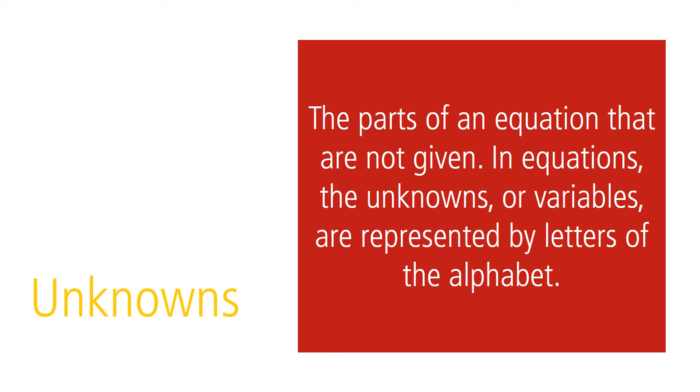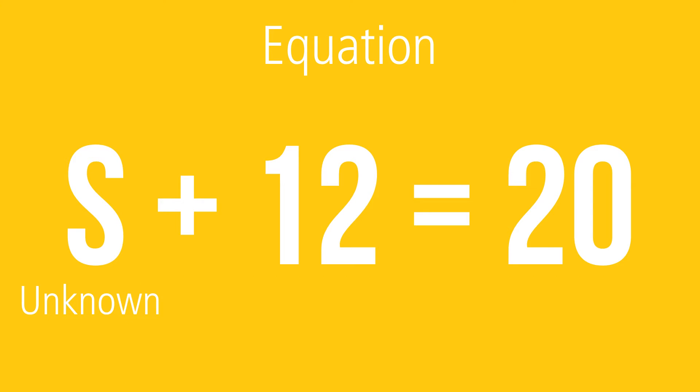Variables or unknowns are the parts of an equation that are not given. In equations, the unknowns or variables are represented by letters of the alphabet. In our example here, S is the variable or the unknown.